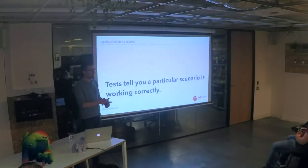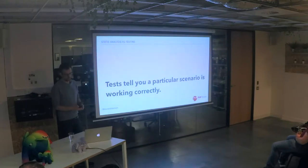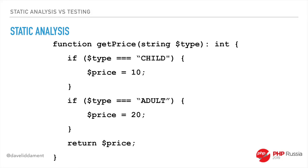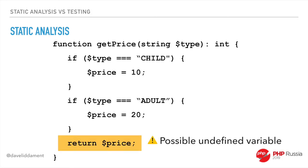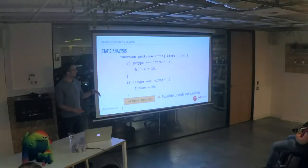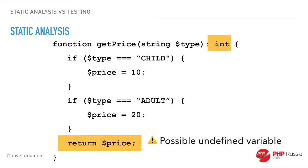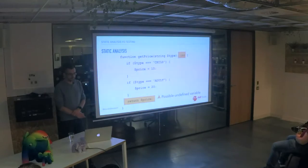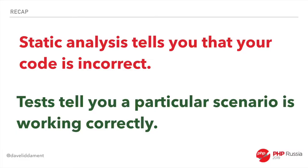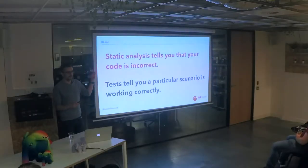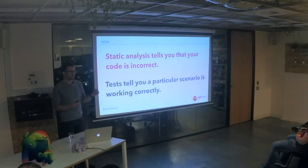We know when we give it 'child' it works correctly, and when we give it 'adult' it works correctly. But what would static analysis make of that? Static analysis would complain here — it's saying we're possibly returning an undefined variable, because there's a chance we haven't set price at all. We're expecting an int, so there's a chance we would not be returning something that's an int. Static analysis tells us our code is incorrect, nagging us that we made a mistake, whereas tests only tell us the scenarios we have written tests for are working correctly.